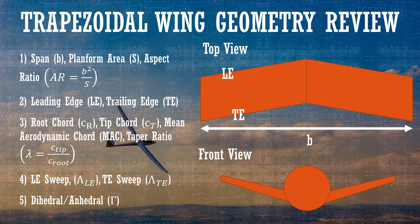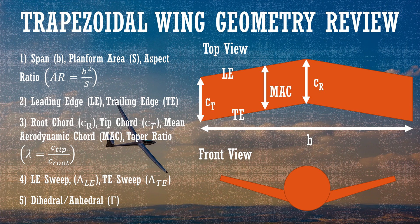The root chord is the distance from the leading edge to the trailing edge of the innermost part of the wing. The tip chord is the distance at the outermost part. Another chord we often care about is the mean aerodynamic chord, which tells us where the aerodynamic center of the wing is for estimating aero properties — we'll calculate that in a later video. And then you have the taper ratio, which relates the chord length at the tip compared to the root.